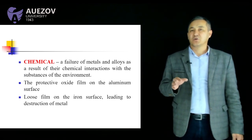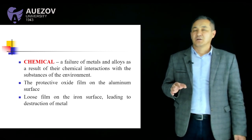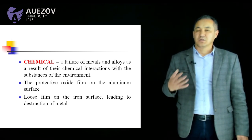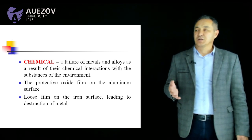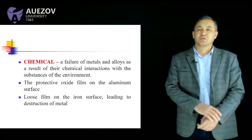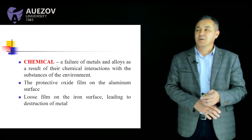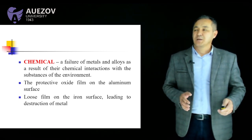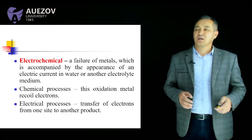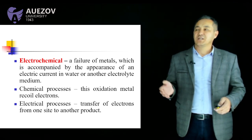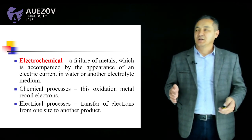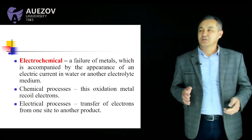Metal corrosion can be of different types, including chemical corrosion and electrochemical corrosion. Chemical corrosion is a result of chemical interaction with substances in the environment. Electrochemical corrosion is the destruction of metals accompanied by the appearance of an electric current in water or other electrolyte medium.